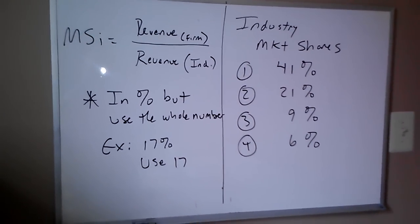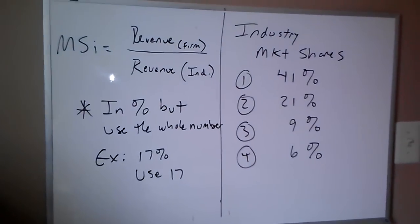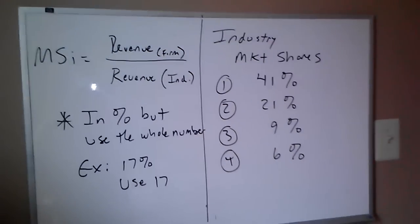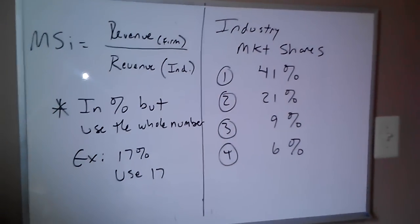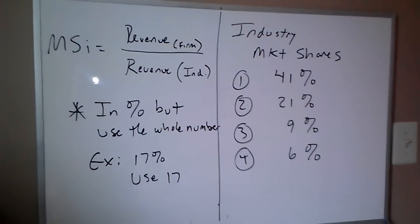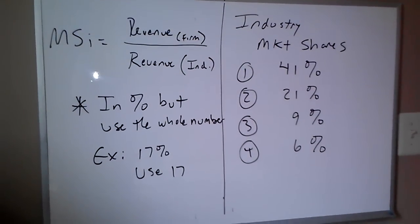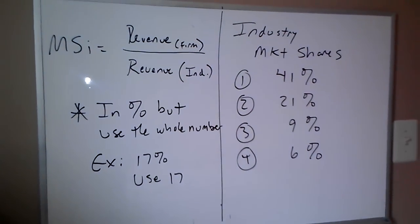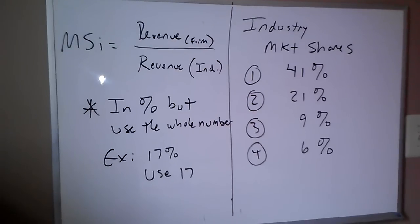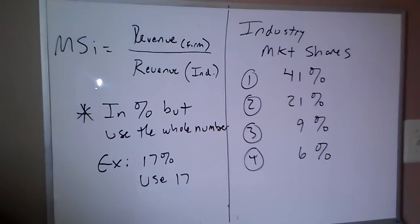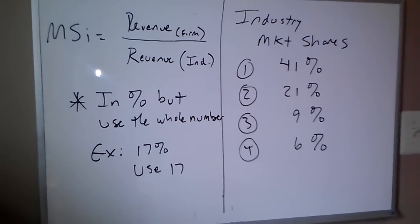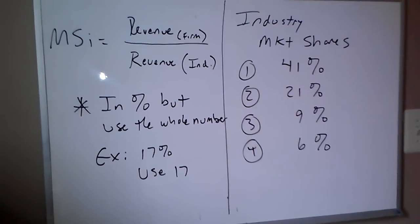We don't love to use the CR levels because we can have two different industries that are very different from each other but have the same CR4 levels. So we like to use the Herfindahl measure so that we can pick up the variance in competitive effects within an industry. I'll have a separate video with the calculation of the Herfindahl.